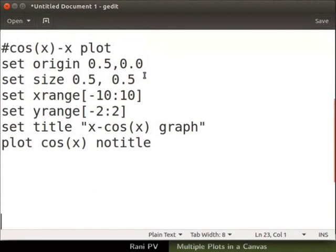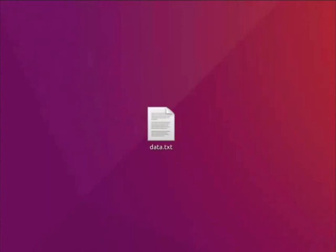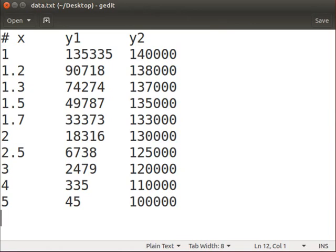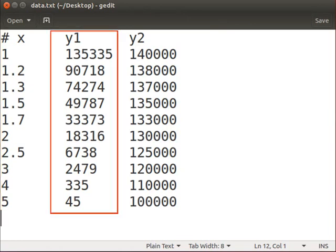I will use the data from the text file data.txt for the third and fourth plots. This file is provided to you in the code files link of this tutorial. I have downloaded and saved the file on desktop. The file has three columns X, Y1 and Y2.